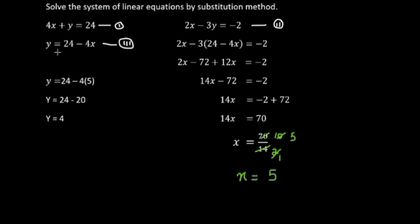Now we find y using equation 3: y equals 24 minus 4x. Substituting x equals 5: y equals 24 minus 4 times 5, which is 24 minus 20. So 24 minus 20 equals 4. Therefore y equals 4.